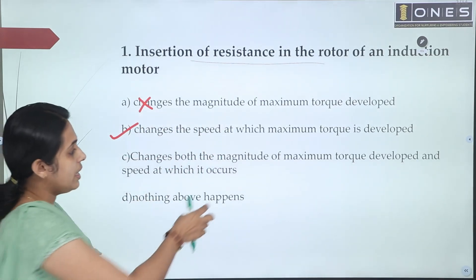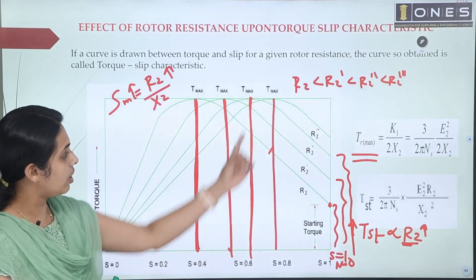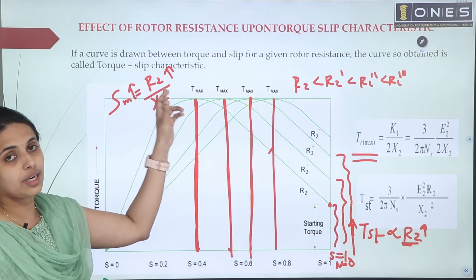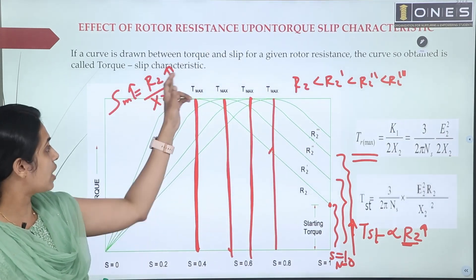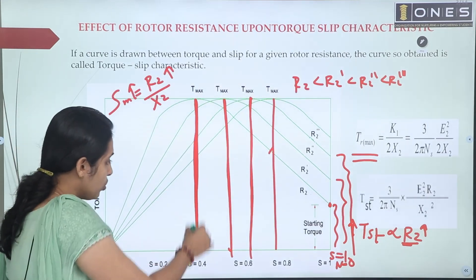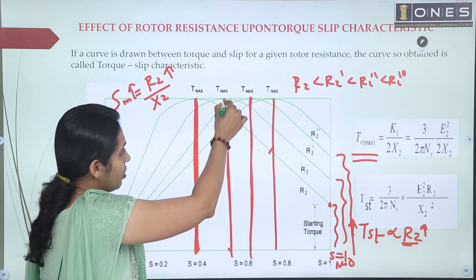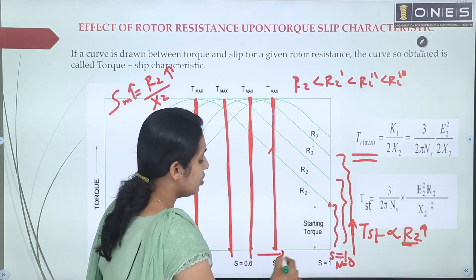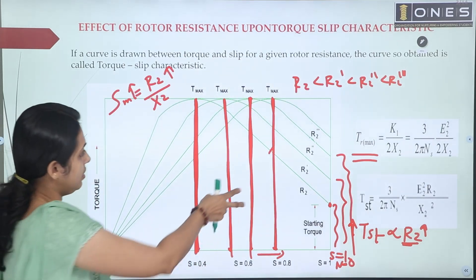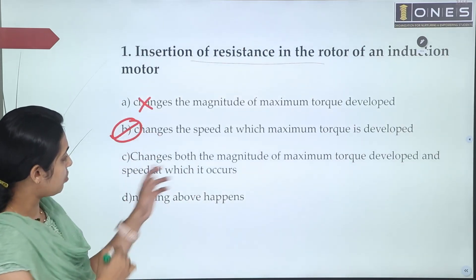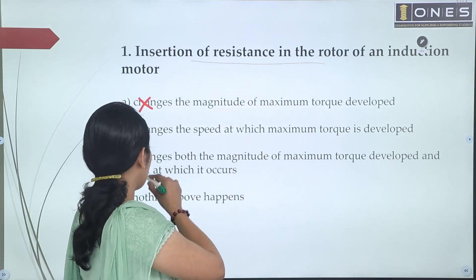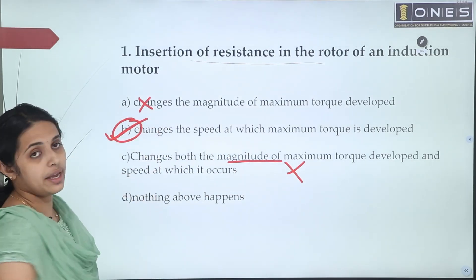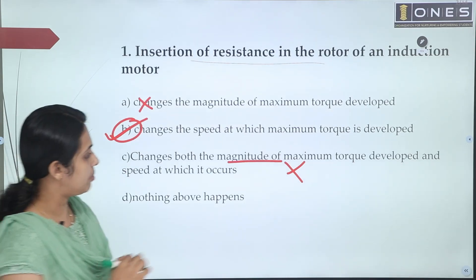The maximum torque magnitude is always constant, but starting torque increases. The slip at maximum torque equals R2 divided by X2, so increasing R2 increases the slip at which maximum torque occurs. Since slip increases, speed decreases — there is a variation in speed. Therefore, Option B is the answer: insertion of rotor resistance changes the speed at which maximum torque is developed. Option C is wrong because maximum torque magnitude does not change.